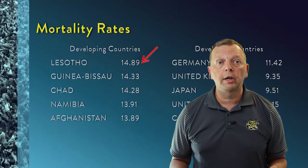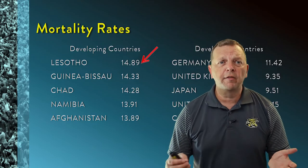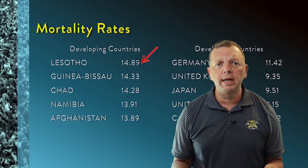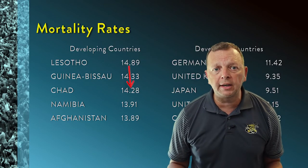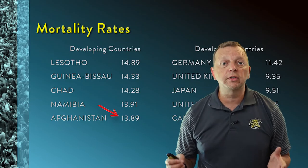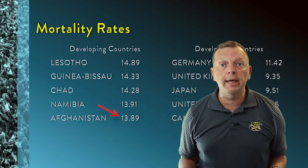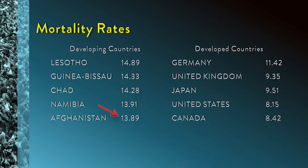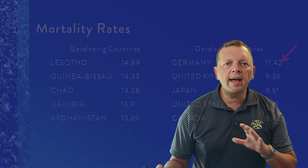For example, the poor African country of Lesotho has a mortality rate of about 14.9, and even Afghanistan has a mortality rate of just about 14, which isn't all that much greater than Germany, which has a mortality rate of 11.42. While you don't have a great difference between rich and poor countries' mortality rates, we do have a huge difference when we start looking at infant mortality rates.